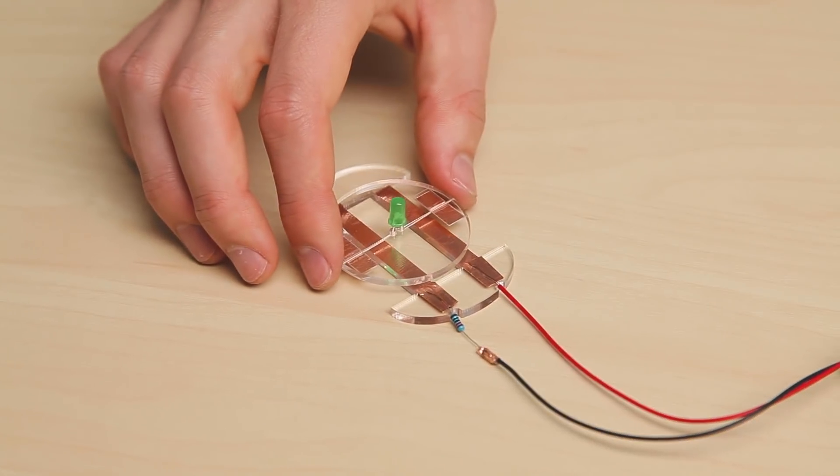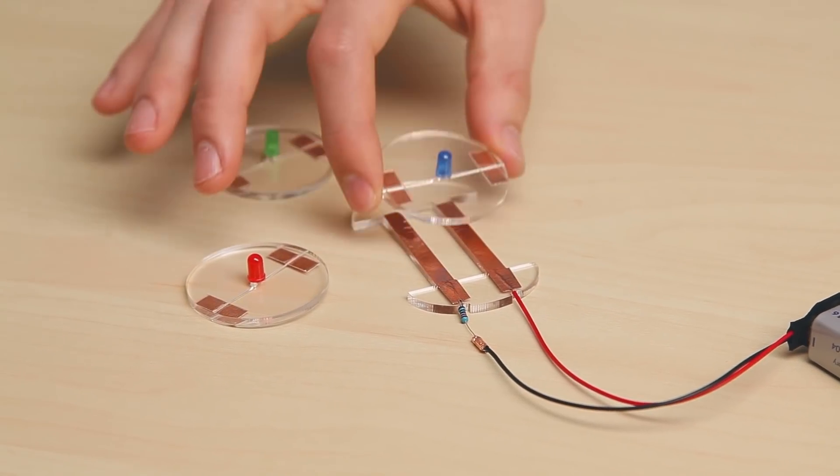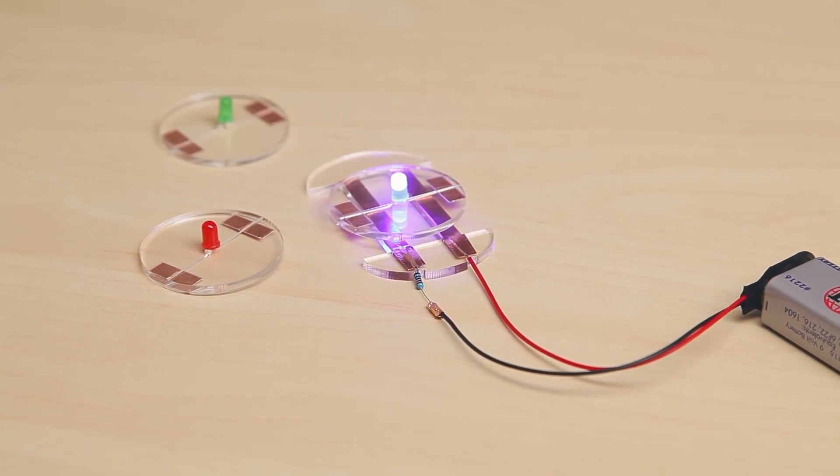Place the acrylic coin on your base to make sure it lights up. Repeat the same process with your other two acrylic coins. And you're done with the electronics.